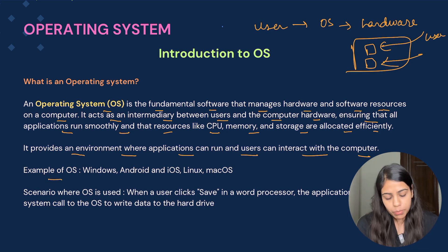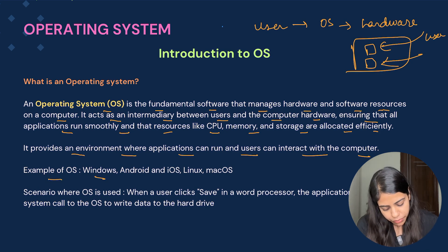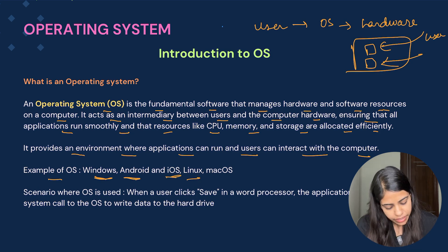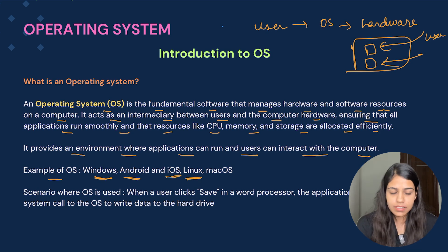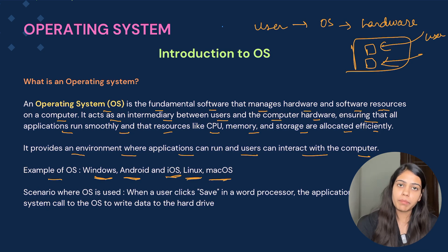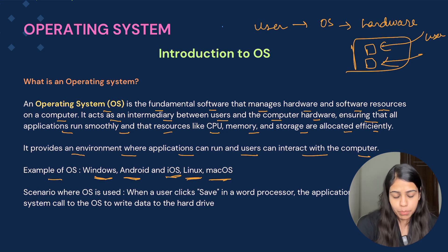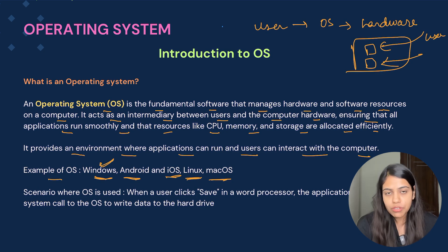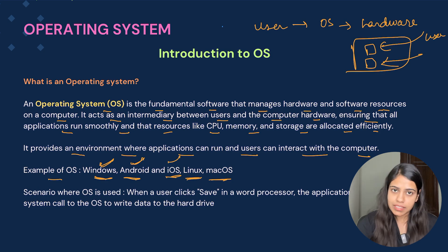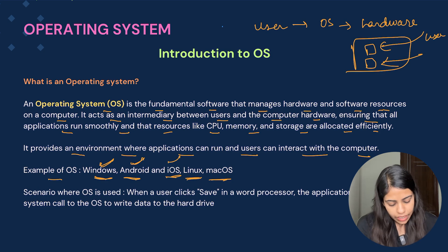What are examples of operating systems? The first is Windows, the second is Android, the third is iOS, the fourth is Linux, and the fifth is macOS or Macintosh. These are some of the most popular and widely used operating systems. Windows is commonly used in laptops, Android and iOS in phones, Linux in laptops, and macOS in laptops.